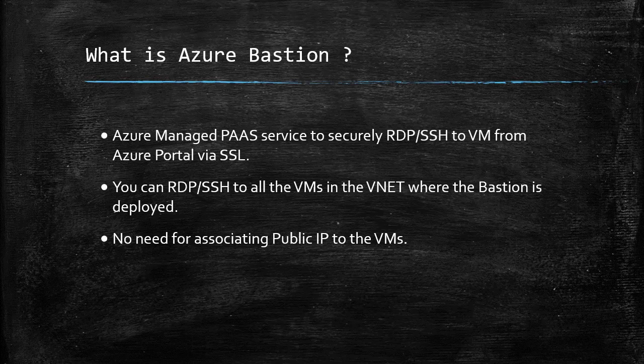Azure Bastion is not a resource for the whole subscription, and it's not a resource for a specific VM. It is basically a resource that can be used by all the VMs in a specific VNet. There is also no need for associating a public IP address to the VMs, because you will be using the Bastion host to RDP or SSH to the resources in the VNet.